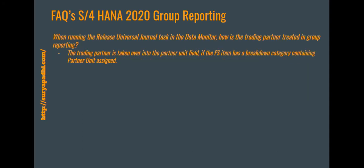When running the 'Release Universal Journal' task in the data monitor, how is the trading partner treated in Group Reporting? When you are releasing data from the Universal Journal, the trading partner will be converted into the partner unit and updated in the ACDOCU table.